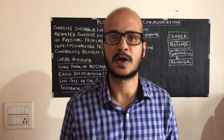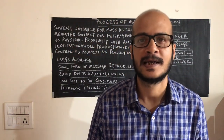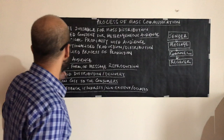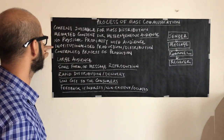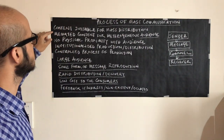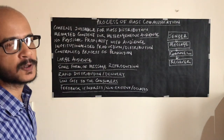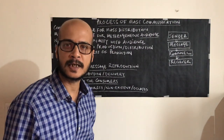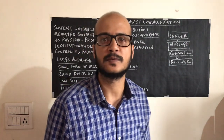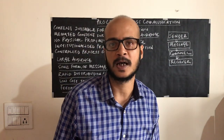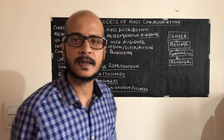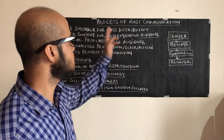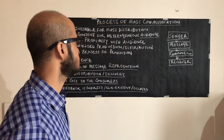Good morning everyone. In today's session we are going to talk about the process of mass communication. The first key feature through which mass communication is possible is that content must be suitable for mass distribution. Every kind of content that we create must keep that in mind.